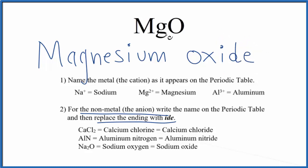So the name for MgO is magnesium oxide. If you were given the name and asked to write the formula,